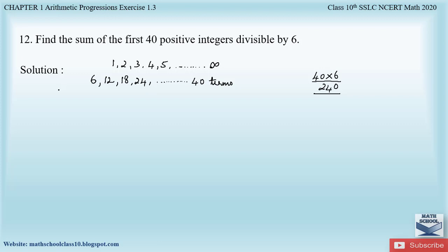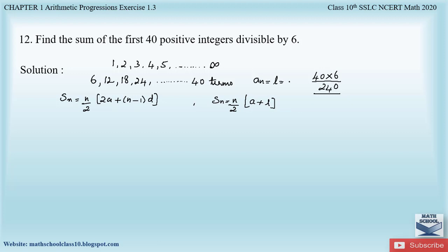Now let us find out the sum. The sum can be found using Sn = n/2 × (2a + (n−1)d). We can also use Sn = n/2 × (a + l), because here we already know the nth term, which is 240. Either formula can be used since we know the last term is 240.